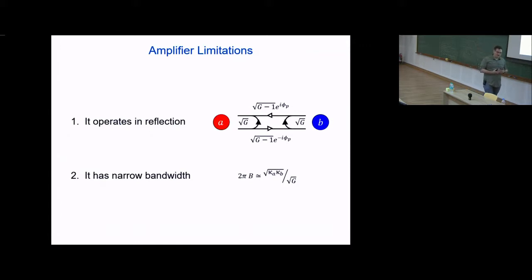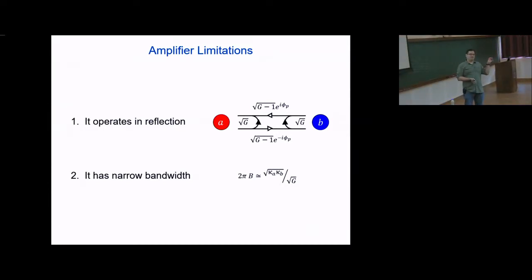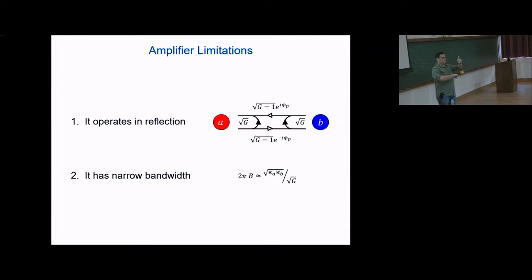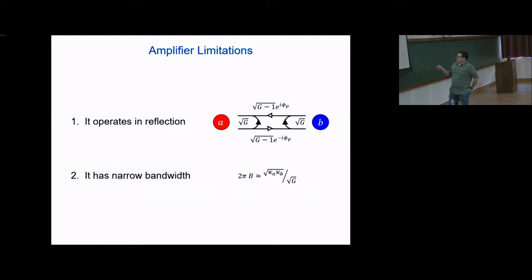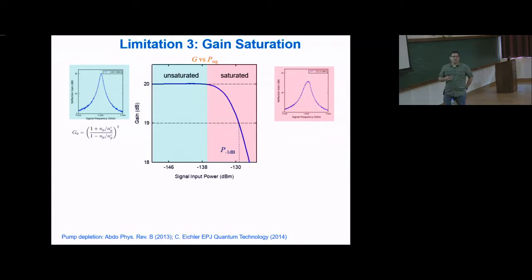There are important practical limitations. First, the amplifier amplifies in reflection, requiring external circulators to route incoming and outgoing signals into different ports — otherwise the amplified signal goes right back into the quantum system being measured. Second, narrow bandwidth that worsens with higher gain. Third, gain saturation — sometimes called P−1dB: gain falls as input signal power increases. The simple explanation is pump depletion: the input signal pulls power from the parametric pump, reducing pump power and therefore gain.